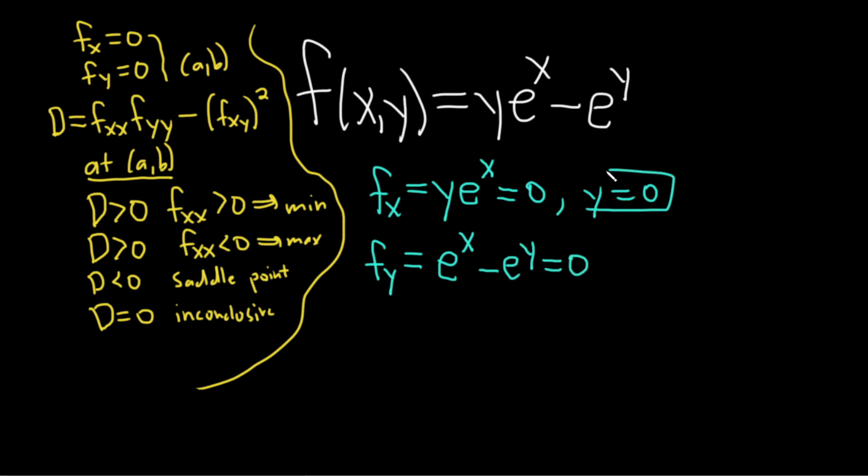So we know y is zero. That's really important. If we plug it in here, we get e^x minus e^0, and that's equal to zero. But e^0 is 1, so this is e^x minus 1, and that's equal to zero. Adding 1 gives us e^x equals 1. That means that x must also be zero, because e^0 is 1.